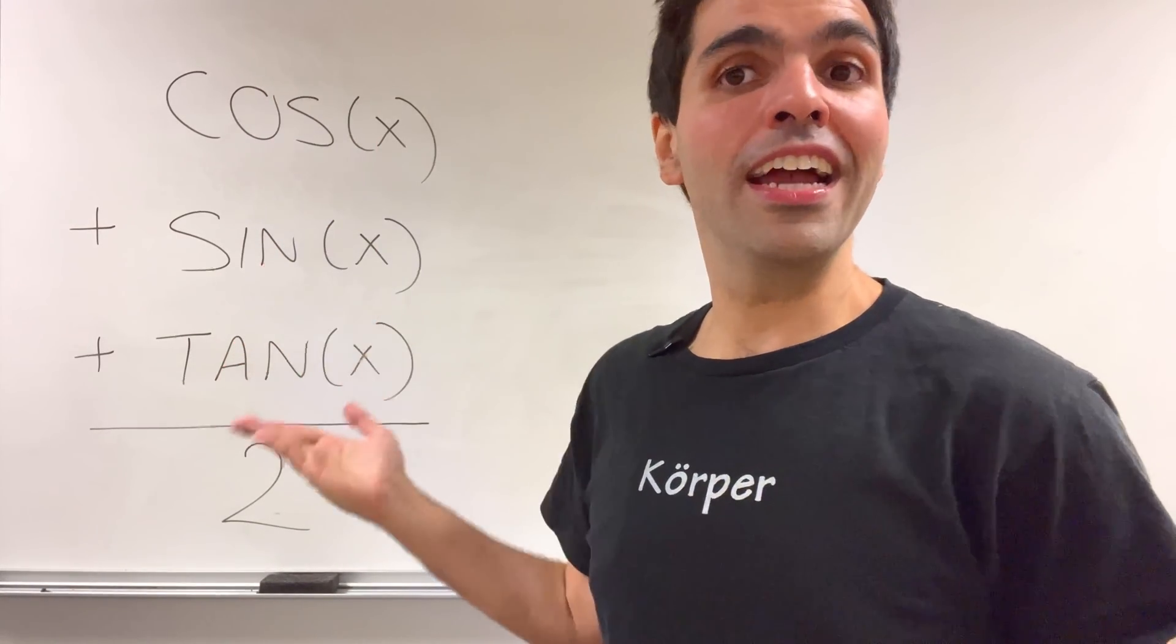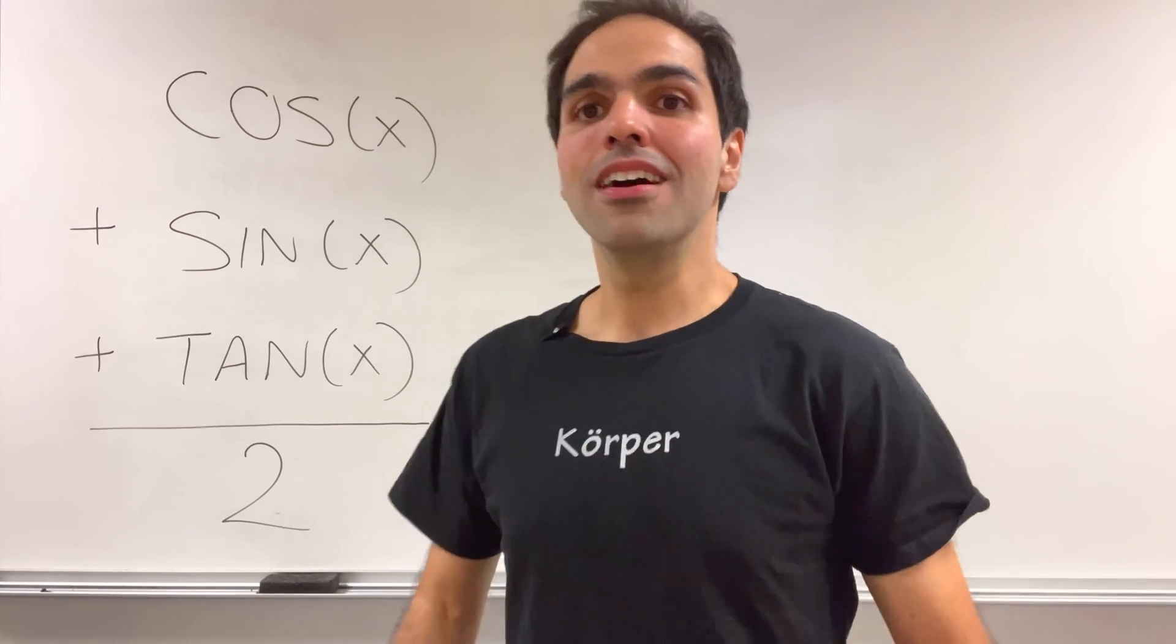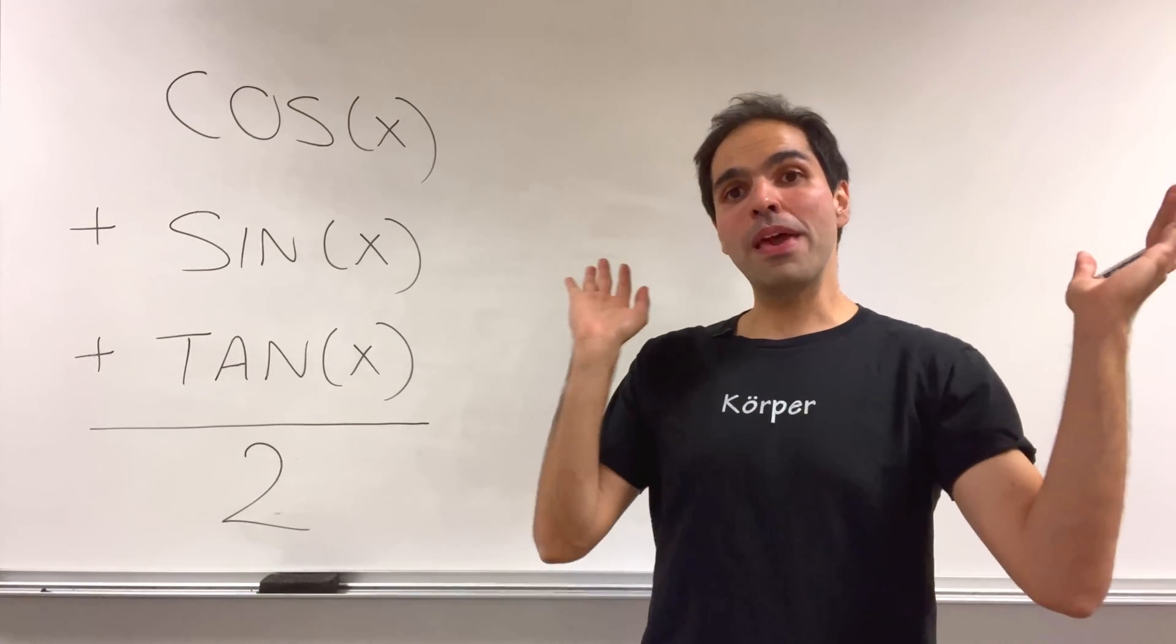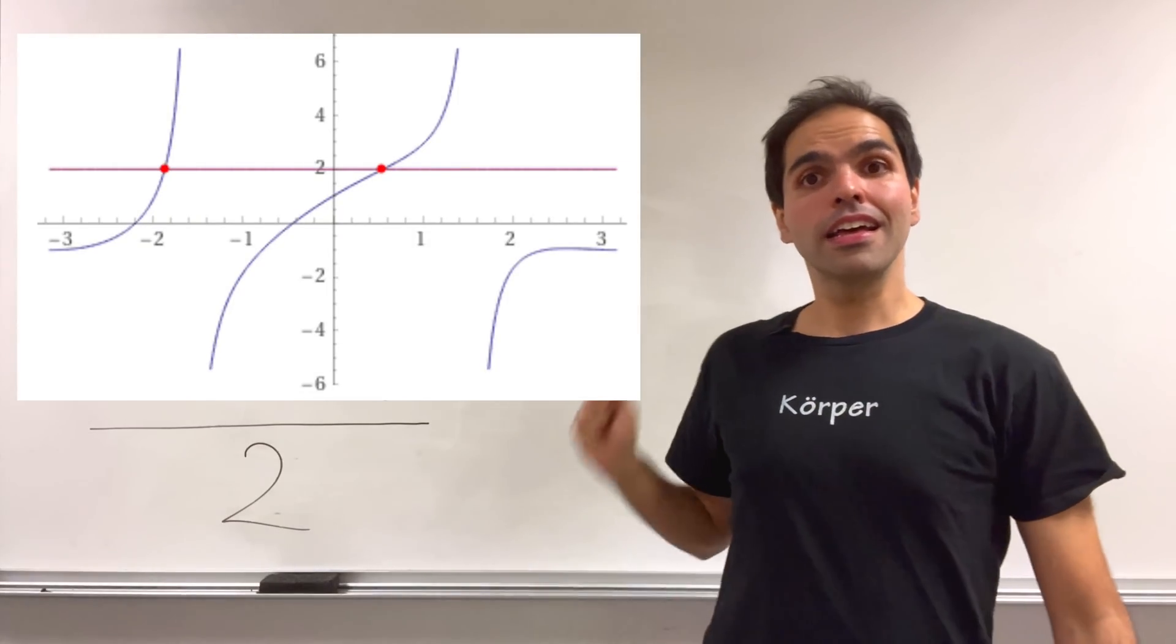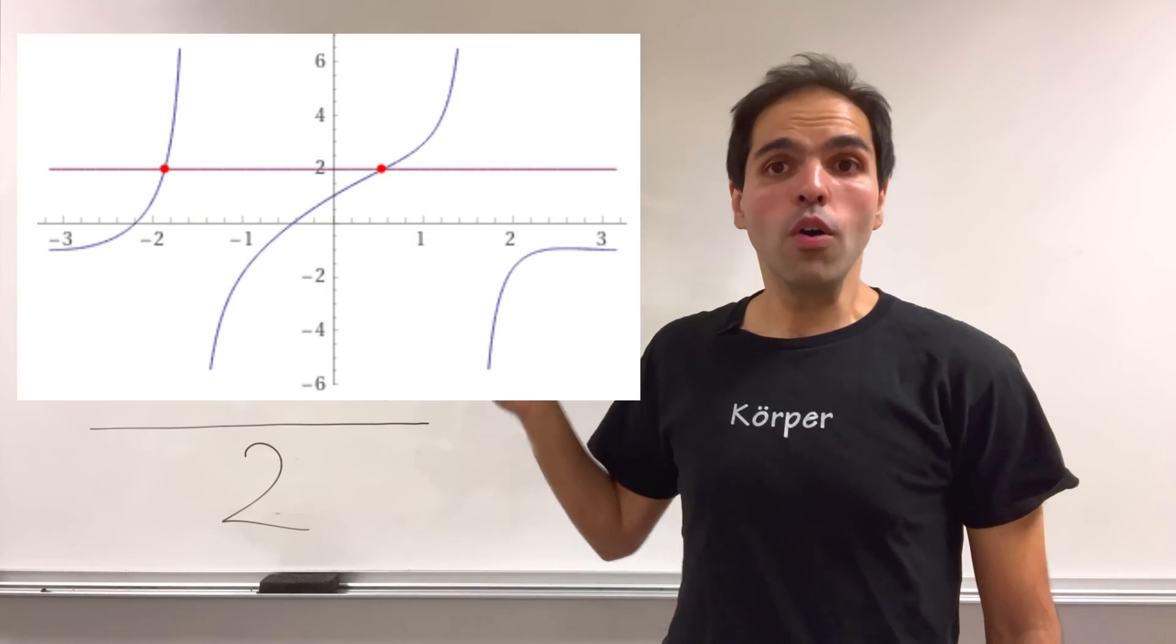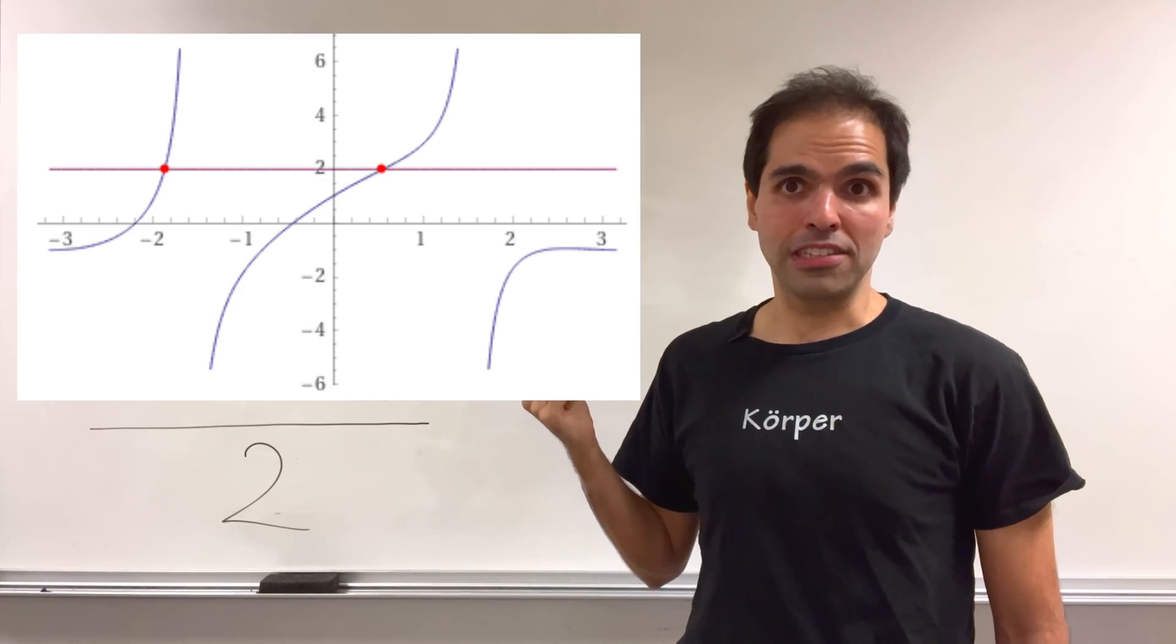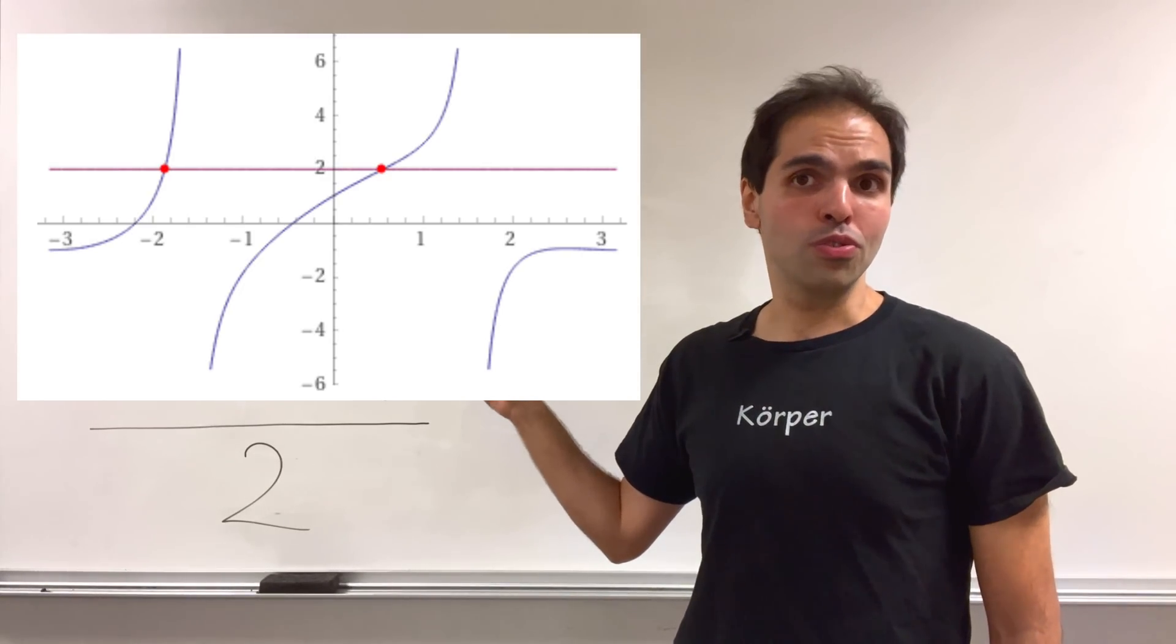Let's solve cosine plus sine plus tangent equals two. And you'll see, it's really cool. First of all, based on the picture, it seems there are at least two solutions, one roughly 0.5 and one close to minus two. So let's find those two first.